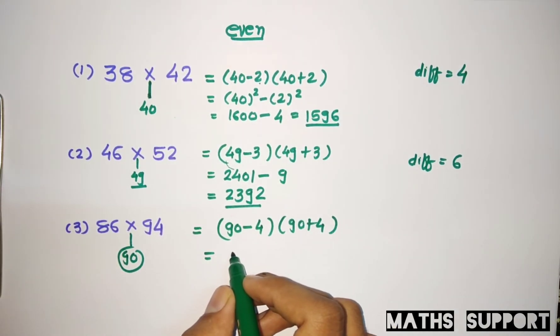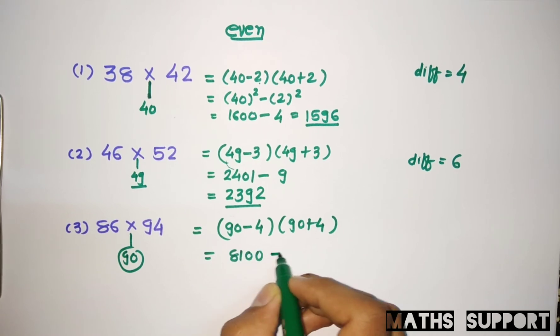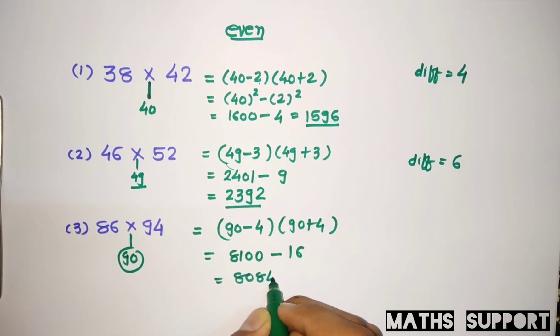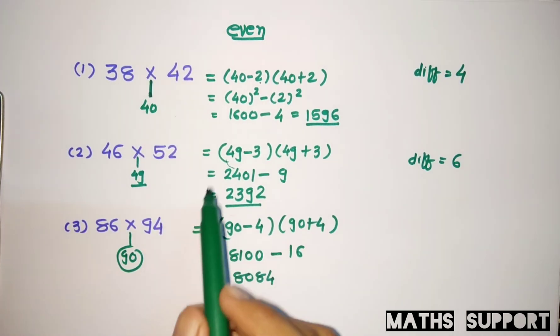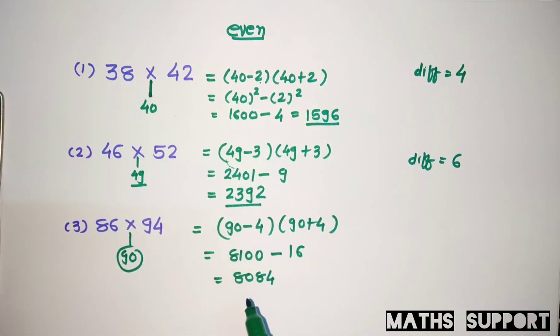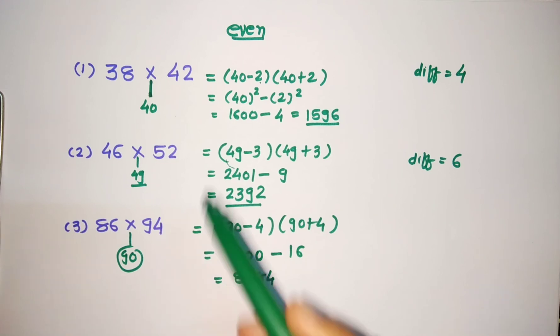90 square is 8100 minus 4 square is 16, so your final answer will be 8084. So whenever you are finding the difference of two numbers as even, you can apply this method. Once you are familiar with this method, you can find the multiplication mentally also. That's a very simple method. Thank you.